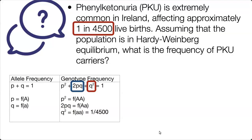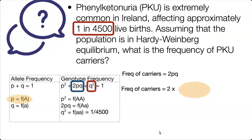Write down in your table that Q squared is equal to 1 over 4,500. We need to solve for 2PQ, so it's easier to find Q first. We know what Q squared is, so we just take the square root of that to find Q. Q is equal to the square root of 1 over 4,500.